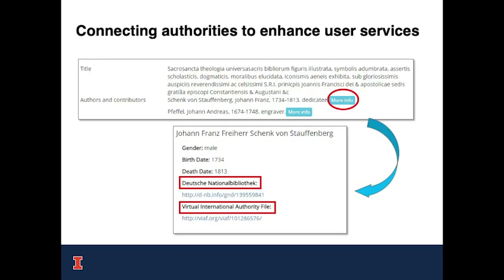In light of using different linked data authorities, we should also think about connecting the authorities one to another in a way that could benefit user services. For example, in Implementica, a user can click on the blue button beside a personal name, which links to both DNB and VIAF name authorities when there is a match. We're working on a more extensive version which connects users to five authorities. Displaying multiple authorities can benefit users with more related information, such as in a different language or name variations.